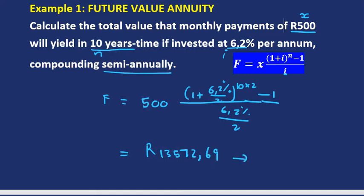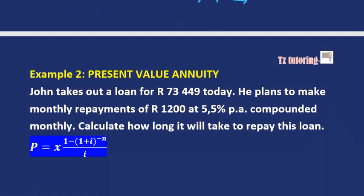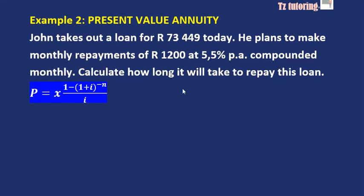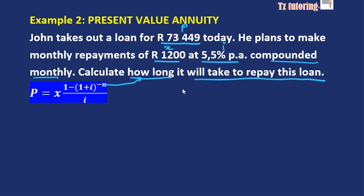Let's look at example two — present value annuity, because there's a loan. John takes out a loan of R73,449 today; that's the present value of the loan, P. He plans to make monthly payments of R1,200 — that's x — at 5.5% per annum, compounded monthly. We must calculate how long it will take to repay the loan, so we're solving for n.